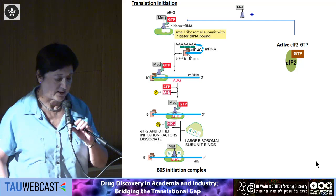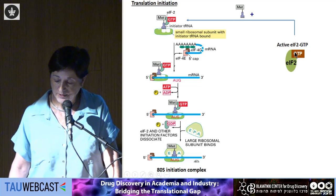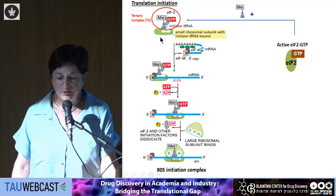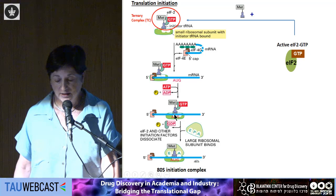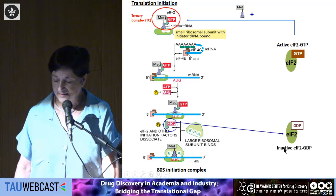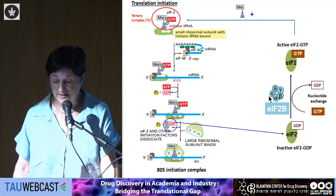Since EIF2B is a translation initiation factor, I'll briefly give you a reminder of translation initiation in eukaryotes. Another translation initiation factor called EIF2, in its GTP-bound form, binds methionine-tRNA, the initiator, to form a ternary complex. This ternary complex is loaded on the 40S ribosomal subunit, and following linear scanning along the 5' UTR, it leads to AUG recognition. Upon AUG recognition, the GTP is hydrolyzed and EIF2-GDP is released from the ribosome, then recycled back to EIF2-GTP by EIF2B. So EIF2B is a guanine exchange factor of EIF2, and is a major regulator of protein synthesis in all eukaryotic cells, highly conserved in evolution.